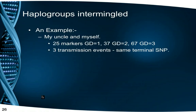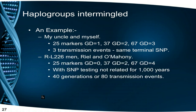For example, comparing the DNA signature of my uncle and myself, we have a genetic distance of 1 at 25 markers, a GD of 2 at 37, and a GD of 3 at 67 markers, over just 3 transmission events, and we have the same terminal SNP. But we also have two L226 men, Real and Amani, who match exactly at 25 markers with a GD of 0, a GD of 2 at 37, and 4 at 67. This would indicate they are almost as closely related as my uncle and I. However, with SNP testing, they are found to not have had a common ancestor for 1,000 years, or 40 generations — 80 transmission events, 40 down each line.